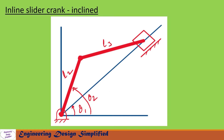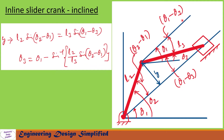Let us see in the coming slides how to derive the equations. First, let us draw a line — a parallel line to this inclined line. The angle from this horizontal to this line is theta 1. The angle from this horizontal to the coupler link is theta 3, so the angle between the inclined line and the coupler (red line) will be theta 1 minus theta 3. The angle between the inclined line and the crank is theta 2 minus theta 1.